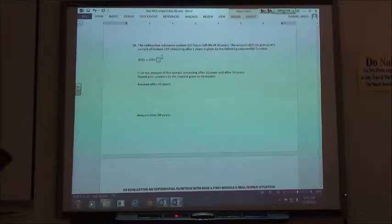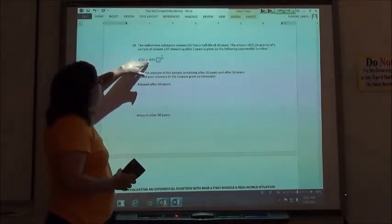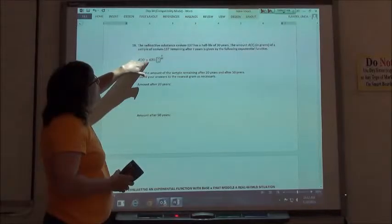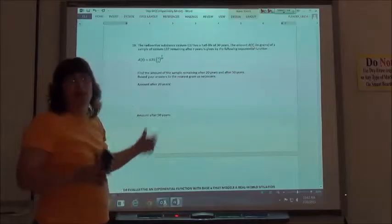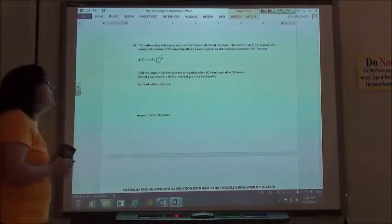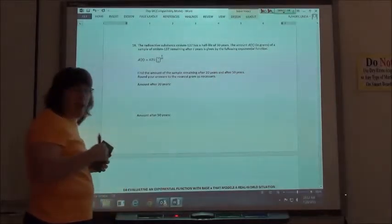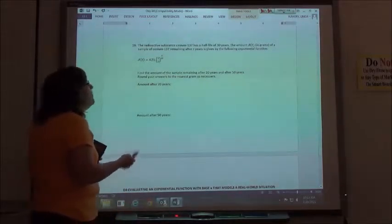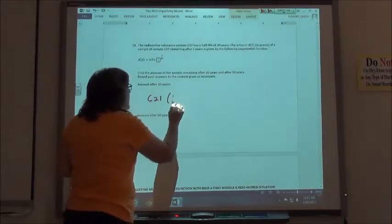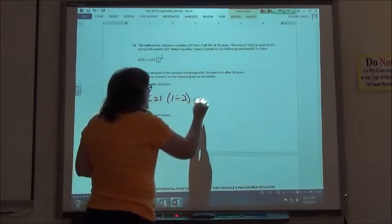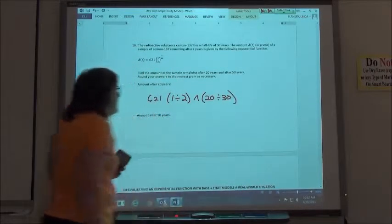And number 18, going to be doing the same kind of thing. They're doing half-life again. The radioactive substance Caesium-137 has a half-life of 30 years, so every 30 years, it cuts it in half. The amount A(T) in grams of a sample of Caesium-137 remaining after T years is given by the following exponential function. Again, here, we're starting with 621 grams. We're doing the half-life, and then we have the time over 30 years, because that's what our half-life is, every 30 years.